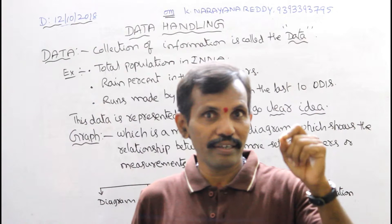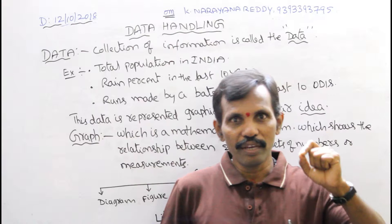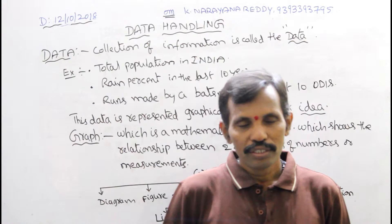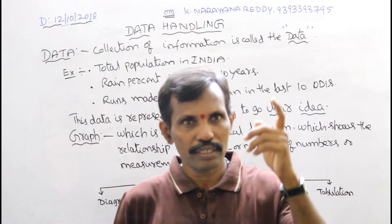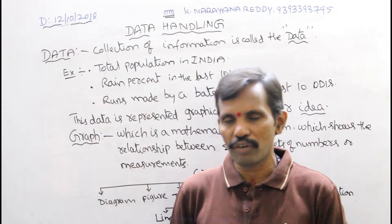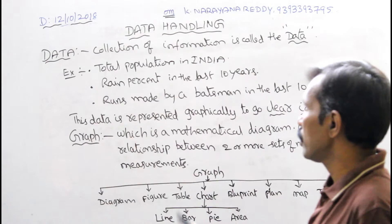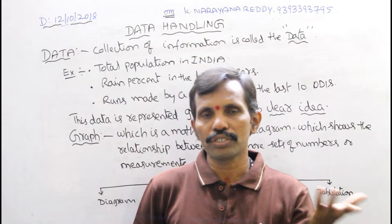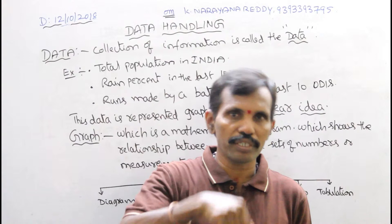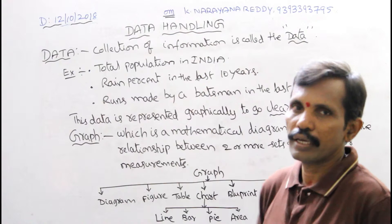Data security is also important. This is a very important chapter in mathematics and data handling. What is meant by data? Data is nothing but collection of information. Collection of information is nothing but data. There are so many definitions for data, but collection of information is called data. A piece of data is nothing but information, and that information is called data.